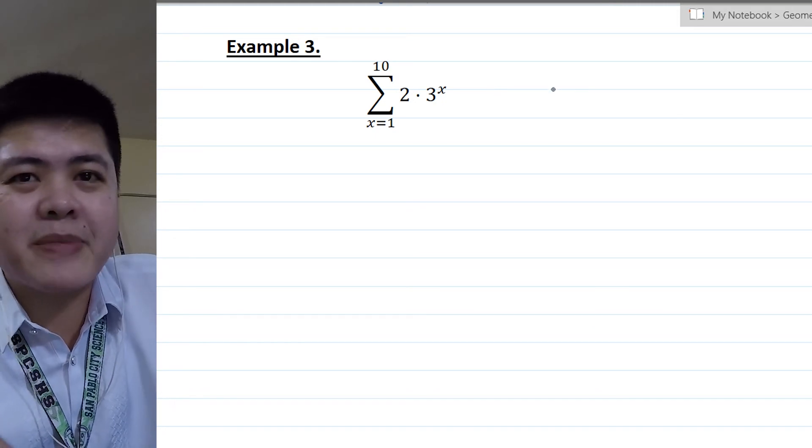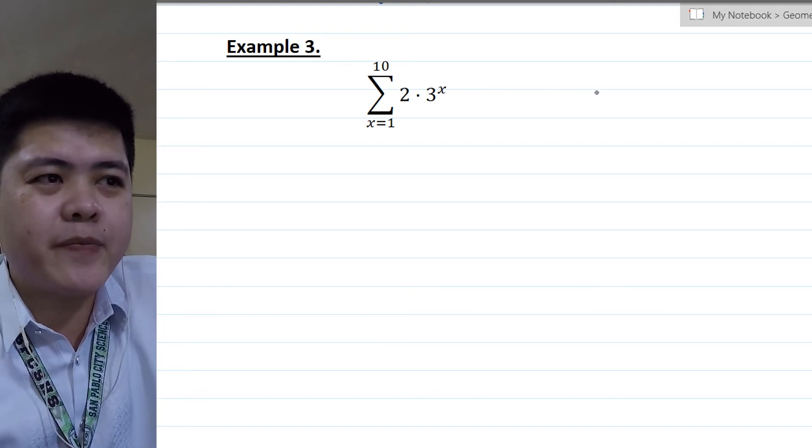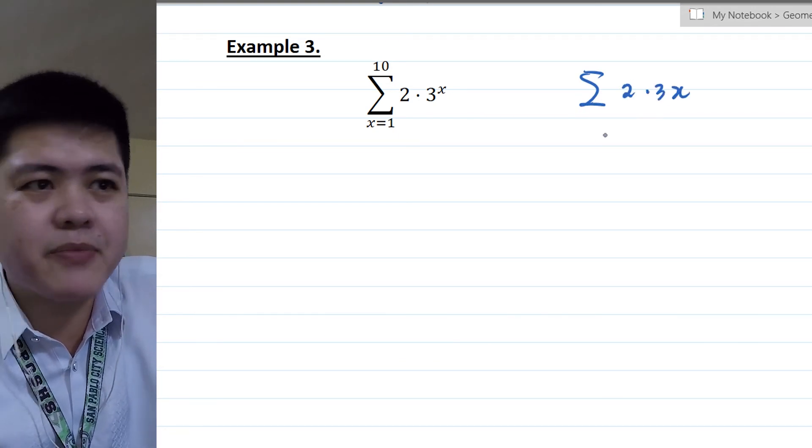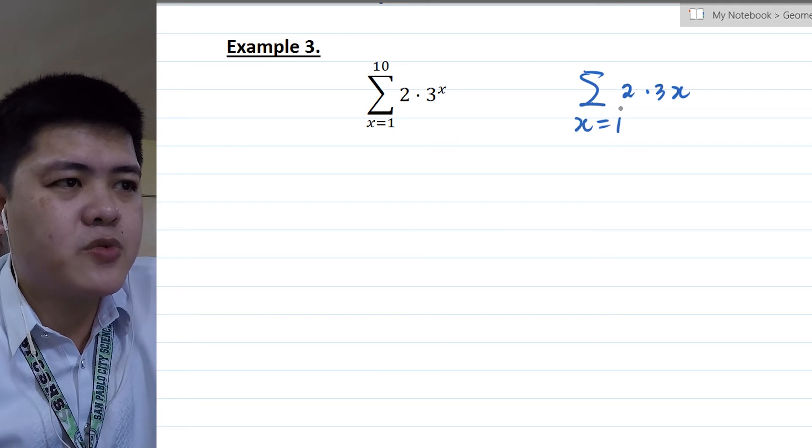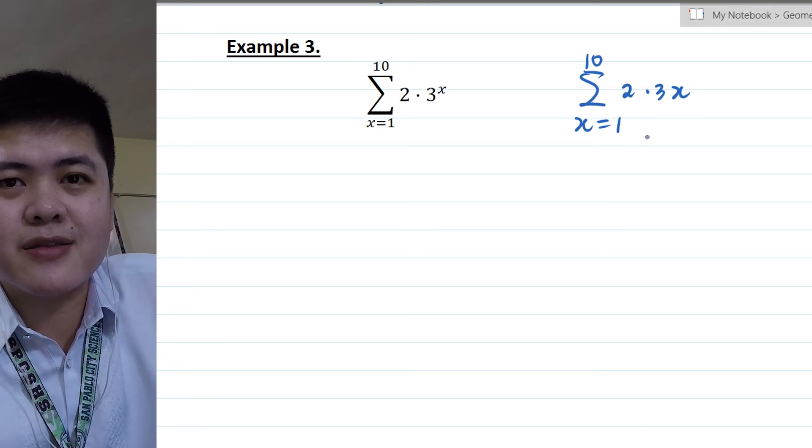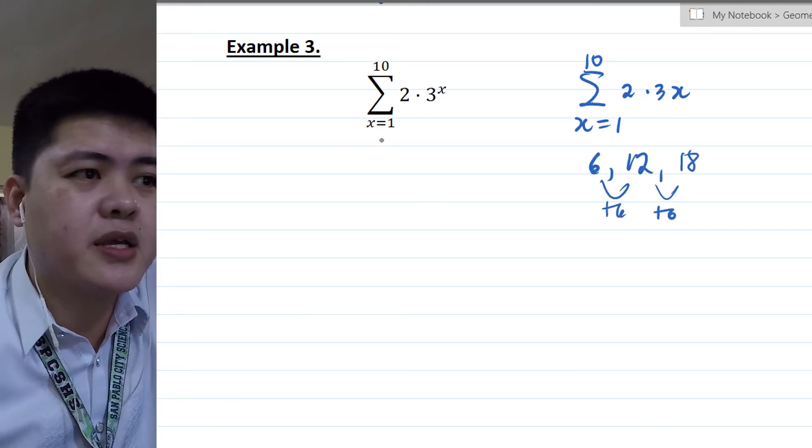Because if it's part of the terms, like for example, if this is summation of 2 times 3x, x equals 1 to 10, this would be arithmetic. But when it's in the exponent, it's geometric. Let's see.